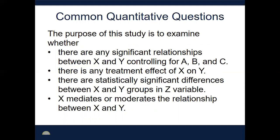As you read about in your book, some of the more common quantitative questions examine whether there are significant relationships between two variables, or sometimes we control for confounding variables to see if they get in the way. We're not really able to examine treatment effects unless you engage in experimental research, which is extremely rare in educational research. We often look at statistically significant differences between groups — for example, whether males, females, and transgender students have different ACT scores. We also talk about variables that mediate or moderate relationships, though that's more advanced than we'll cover in this class.